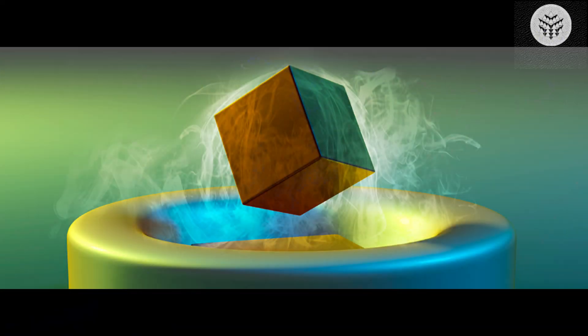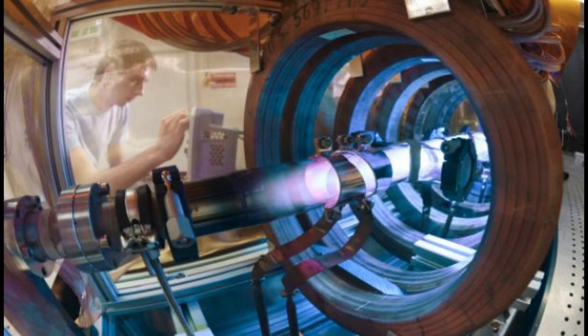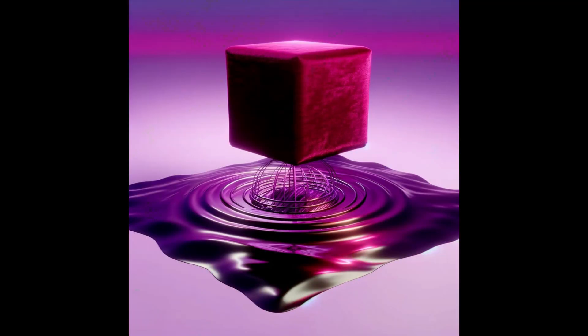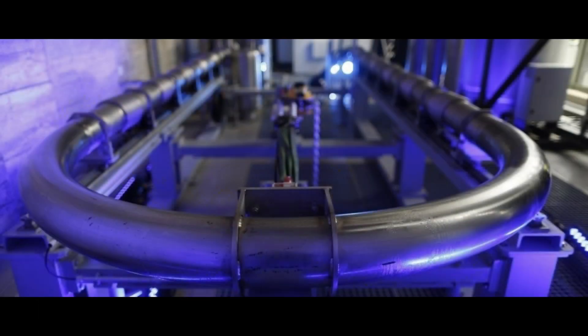According to Prozorov, the search for natural superconductors poses a challenge due to the tendency of most superconducting metals and compounds to react with other elements, particularly oxygen. However, he highlighted the intriguing properties of miocite, RH17S15, including its intricate chemical composition.